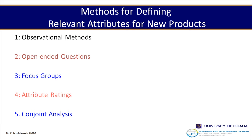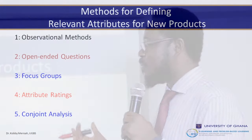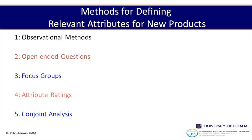Methods for defining relevant attributes for new products: how do we identify new attributes that customers will like? How do we know that adding a particular attribute to an existing service will interest customers? We have five methods. The first is observational methods — through daily line activities, frontline managers who deal with customer complaints and interface with customers almost every day can essentially identify certain things customers would like as a result of daily work experience.